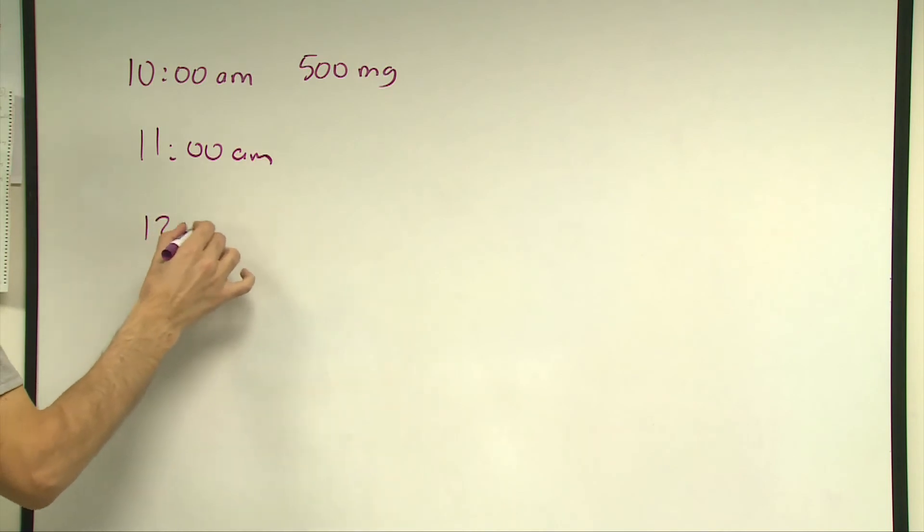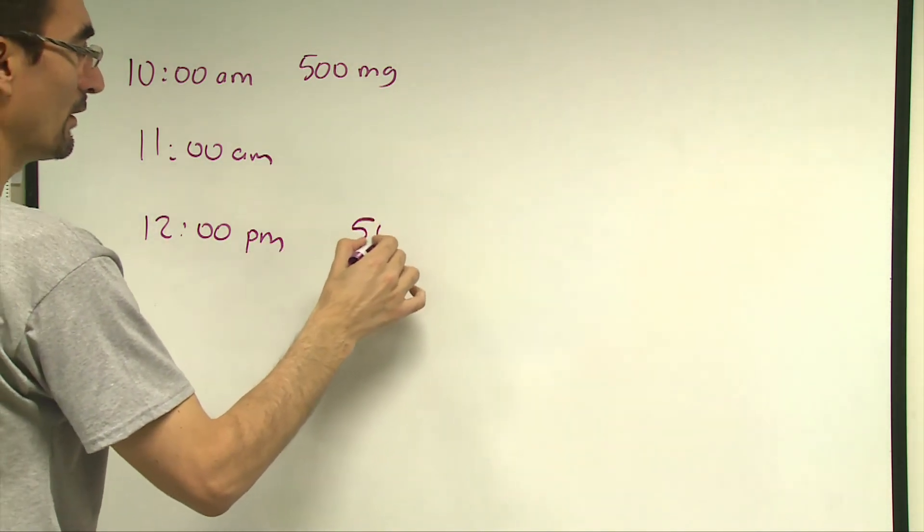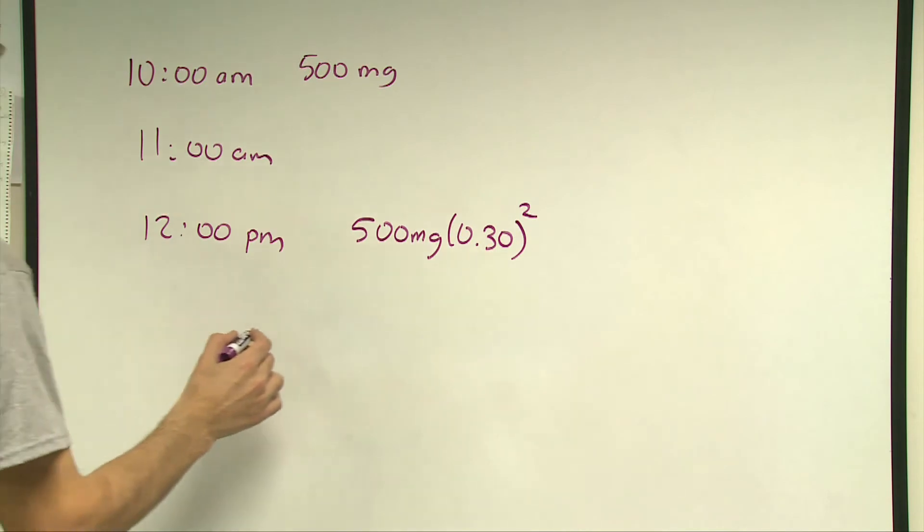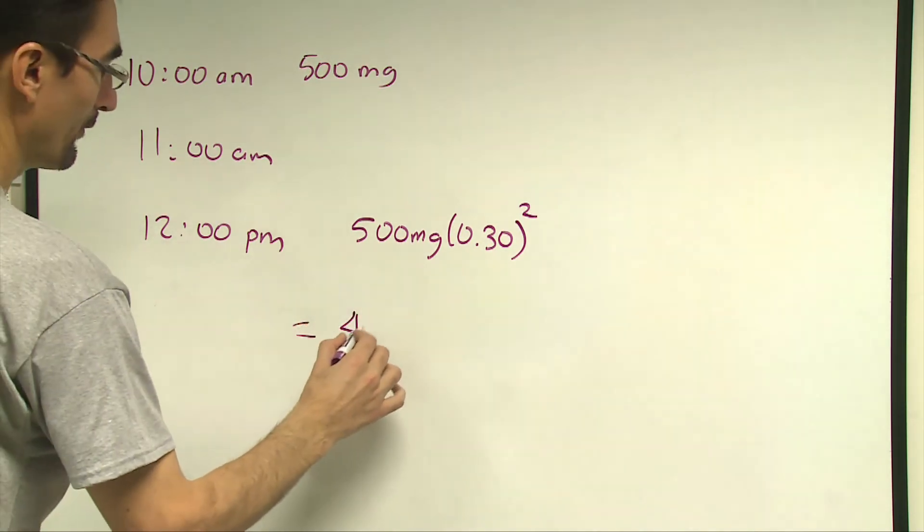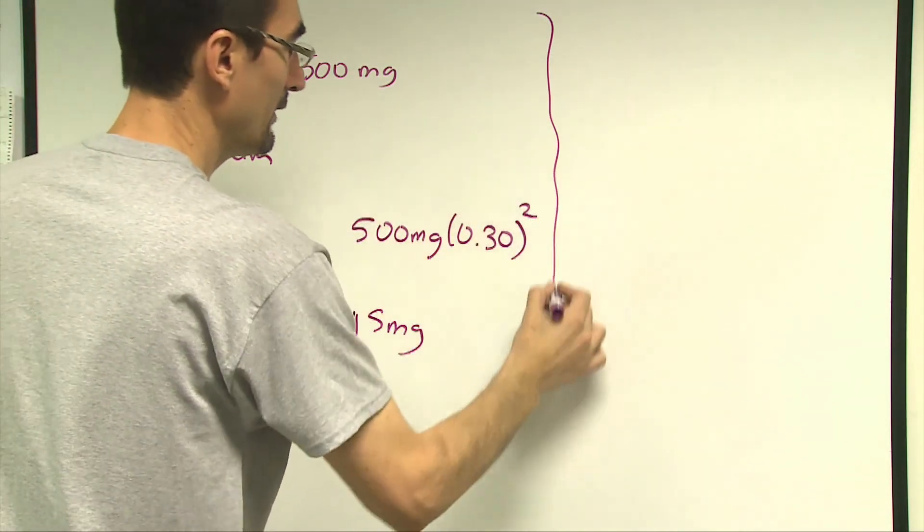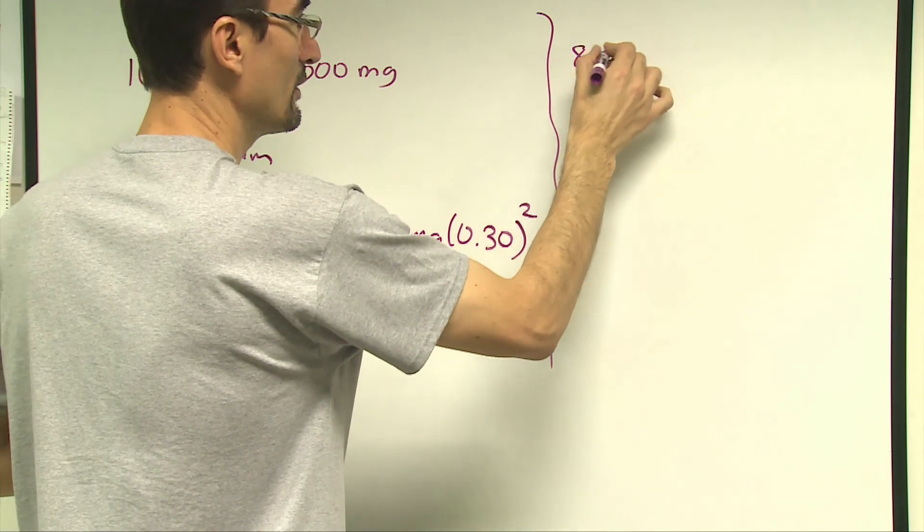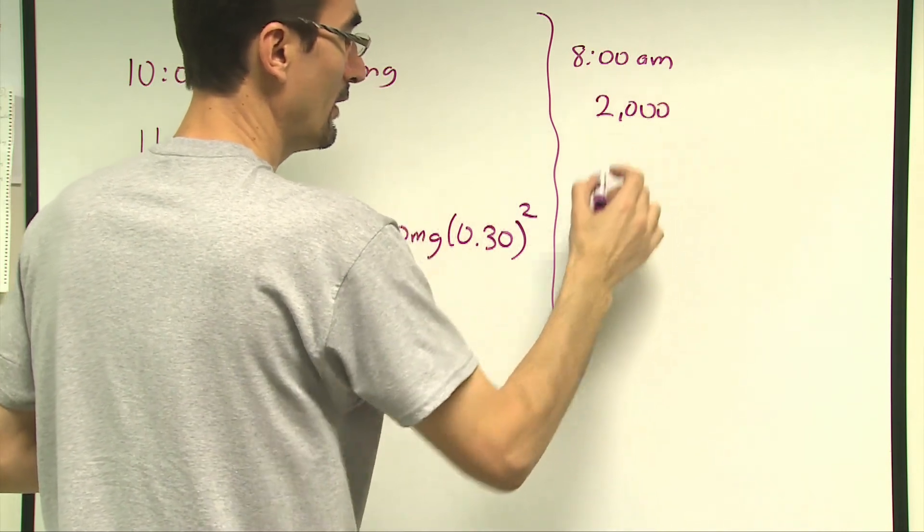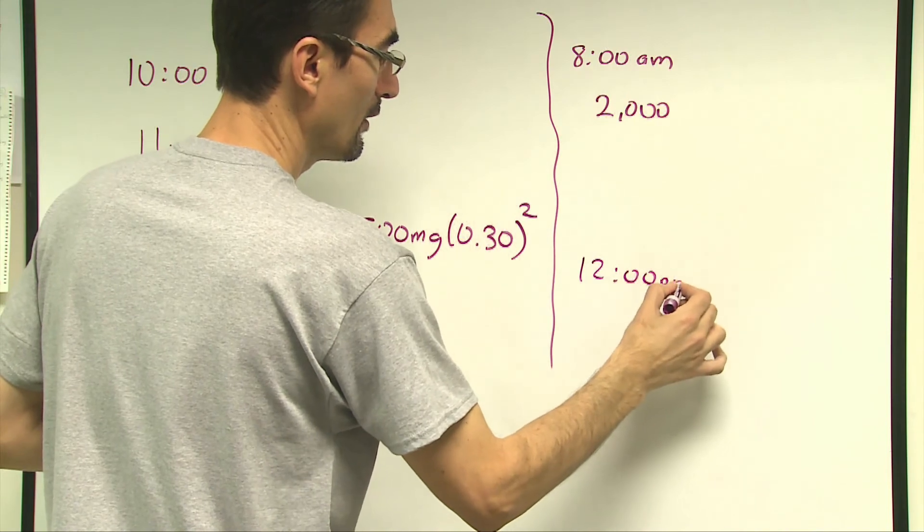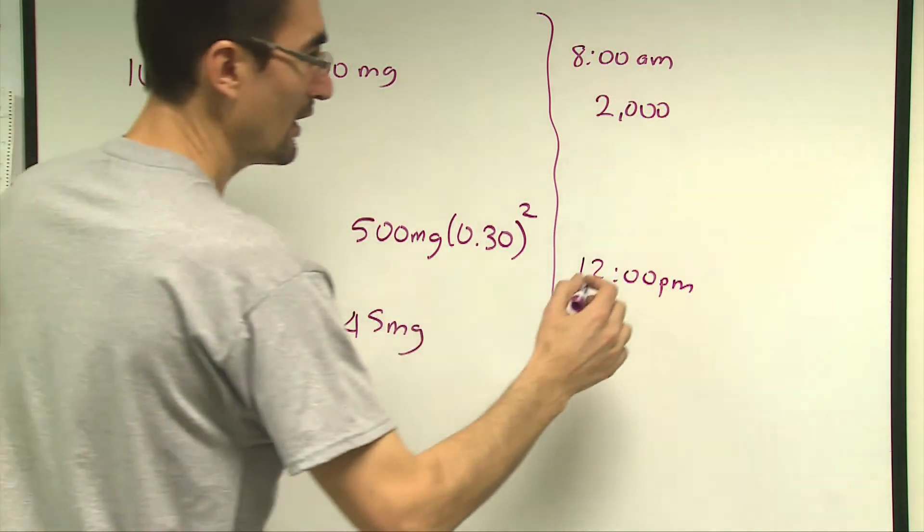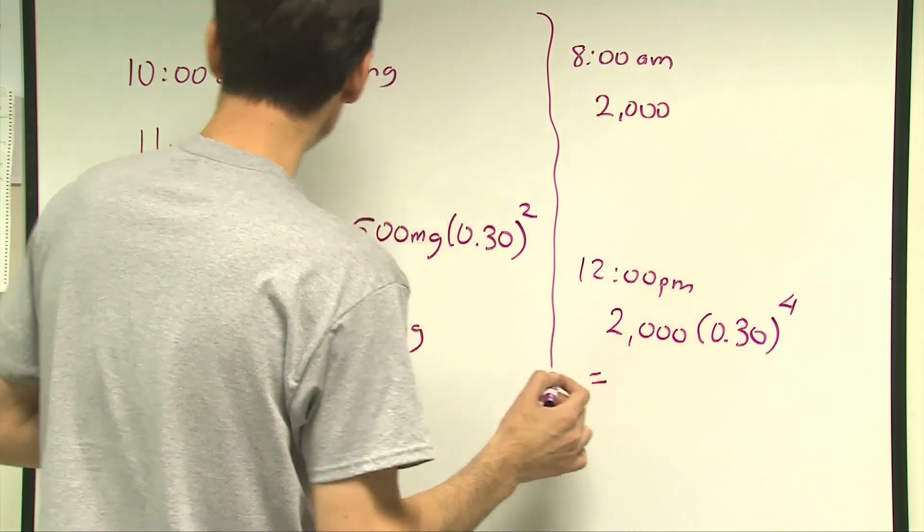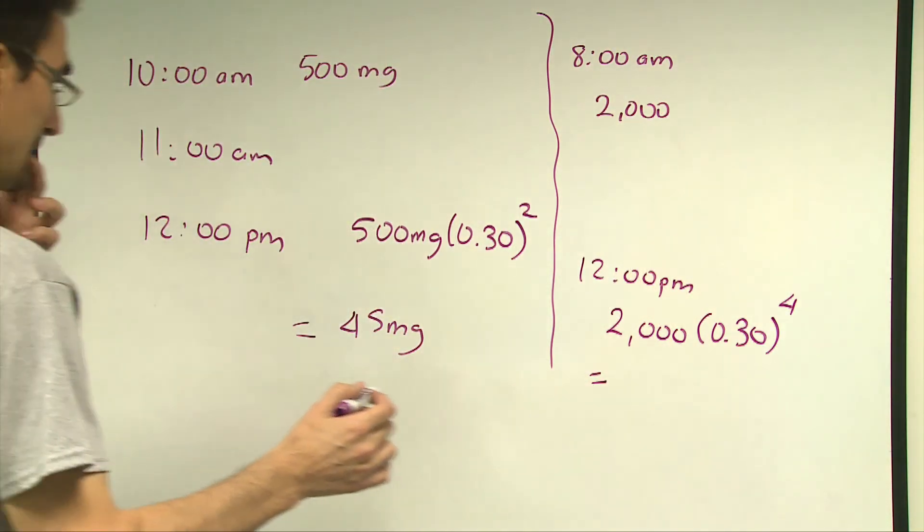So, this is 2 hours time from 10 a.m. till 12 p.m. That means I need to multiply 500 mg by 0.30 raised to the second power, which will be equal to 45 mg. But on the other hand, remember that we're talking about 8 a.m. insertion of 2,000 mg of medicine to this patient. Following the same pattern, what's going to happen at 12 p.m., since 4 hours would have passed, I need to multiply this 2,000 mg by 0.30 raised to the fourth power, which will give me 16.2 mg.